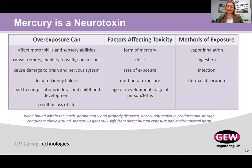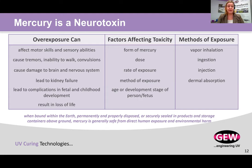Mercury is a neurotoxin. It affects motor skills and sensory abilities, the brain and the nervous system, and can lead to organ failure and even loss of life. Various factors affect the toxicity of mercury: the form, the dose, the rate of exposure, the method of exposure, and the age or development stage of the person or fetus. Mercury can be inhaled, ingested, injected, and absorbed through the skin. When bound within the earth, permanently and properly disposed, or securely stored in products and storage containers above ground, mercury is generally safe from direct human exposure and environmental harm. When used correctly, all of these neurotoxin issues can be avoided.